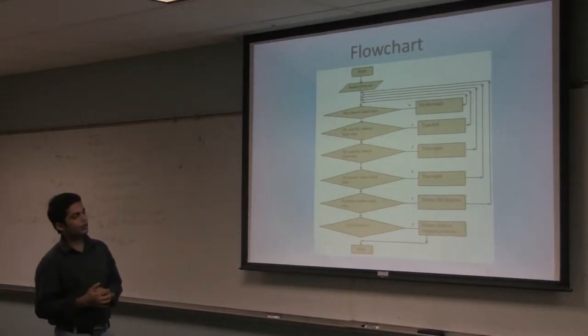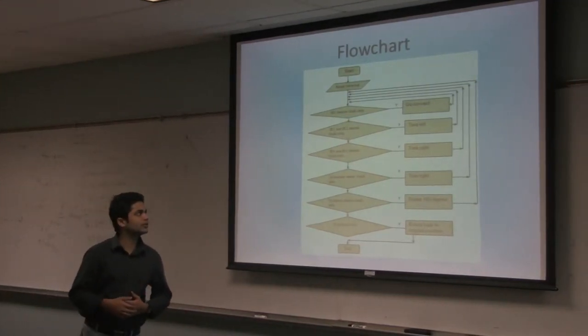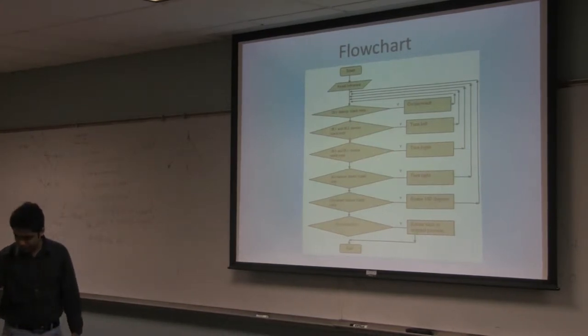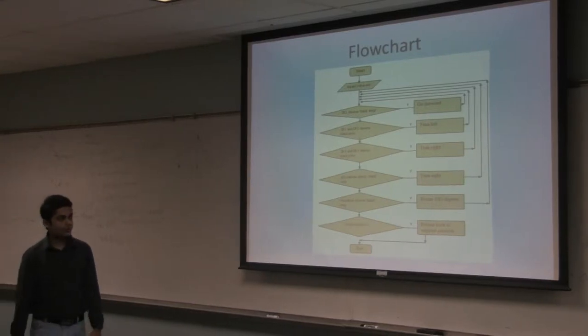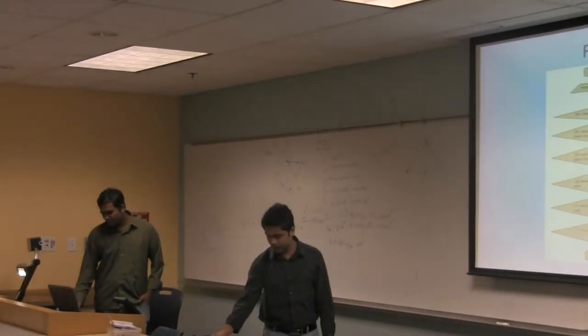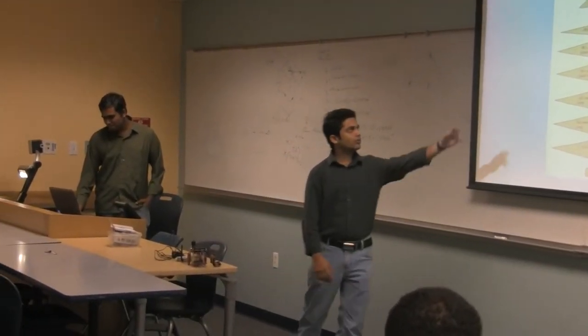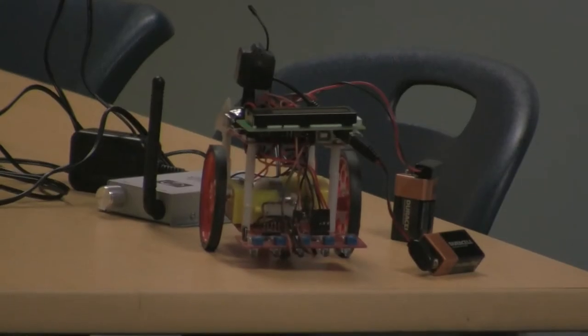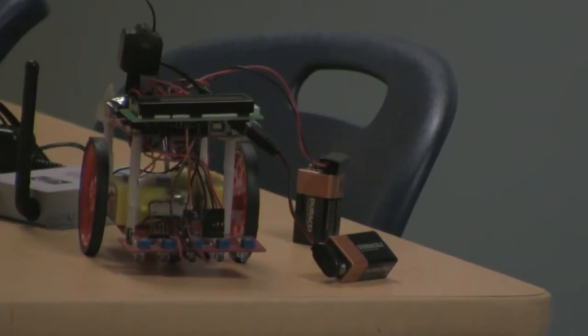This is the basic flow chart showing how the robot is going to work. We have a line sensor mounted at the starting. We have five line sensors. Once you start the robot, if the IR sensor in the middle detects the line, it's going to go straight forward.